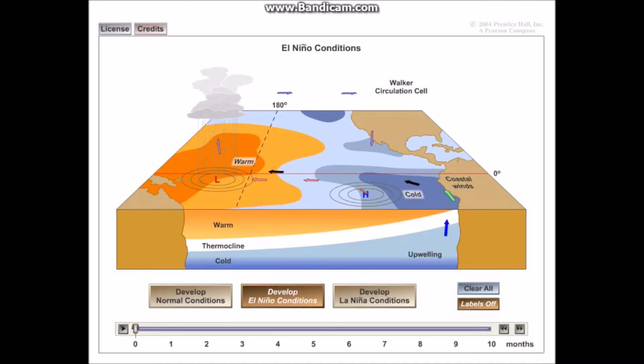Now what occurs in El Niño conditions or in ENSO conditions is that the trade winds that are blowing from the coast of South America to the coast of Southeast Asia break down. They become less and less and weaker, and when eventually they do break down, the cold water and the warm water are no longer held in place by these surface currents. So the warm water tends to slosh back towards the coast of South America.